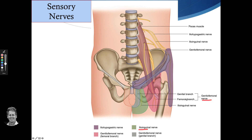The genitofemoral nerve has a genital branch and a femoral branch. The genital branch covers the male scrotal area and part of the penis, and also the labia in the female. The femoral branch is more of the medial anterior superior part of the thigh. They also supply the cremaster muscle in the male for the testicle.